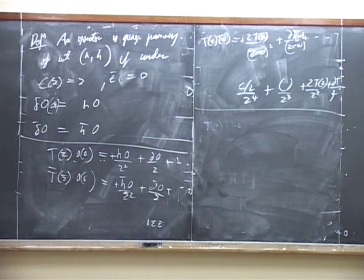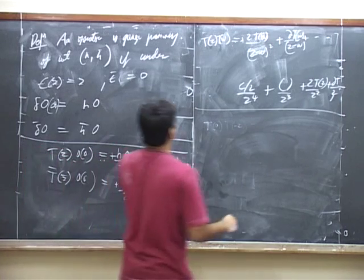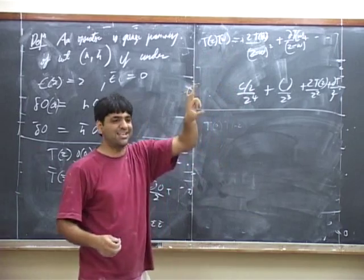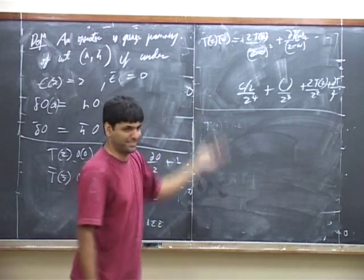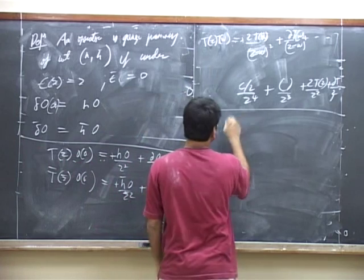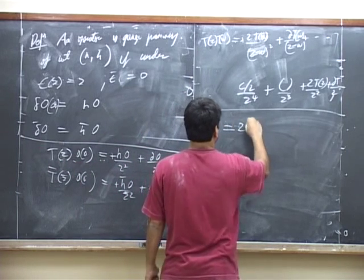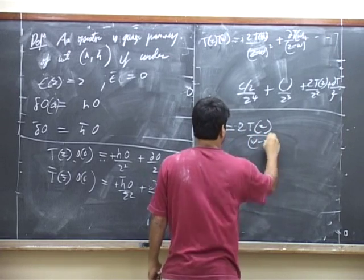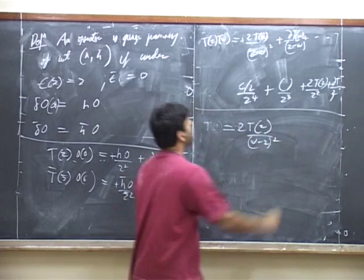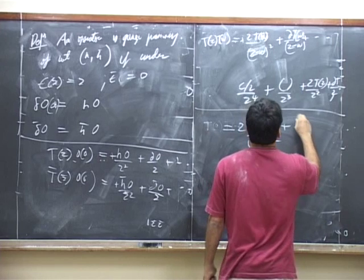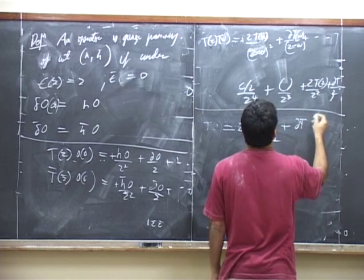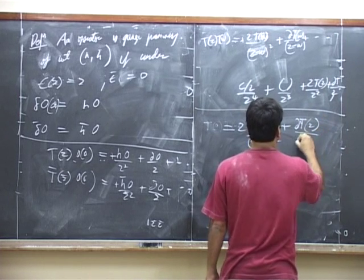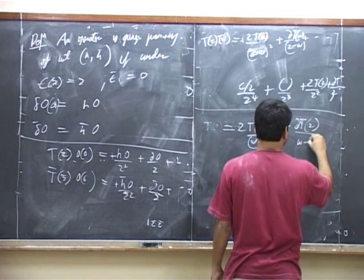What I want to say is that this must be the same thing with z and w flipped, because the left hand side is invariant. This must also be equal to 2t of z over (w minus z) squared plus del t of z over (w minus z).